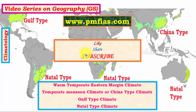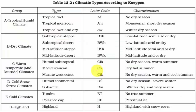In this video we will study about Warm Temperate Eastern Margin Climate. This type of climate occurs on the eastern coasts of continents in the subtropical regions. Under the Köppen Scheme of classification, it is represented by CFA, where C stands for mid-latitude type of climate, F for wet type of climate, and A for warm summer type of climate.